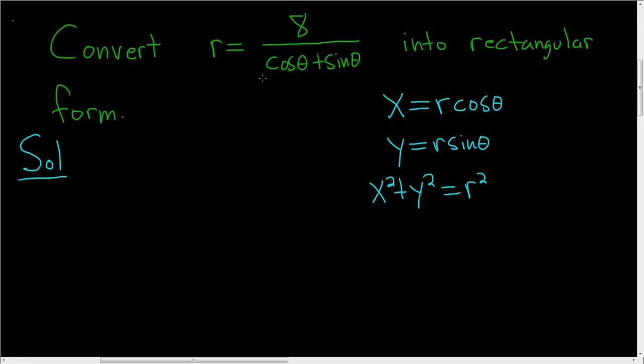When we first look at this problem, we'll notice that we have a cosine and a sine, but we don't have the r's. So one idea is to multiply both sides by cosine theta plus sine theta.